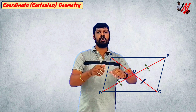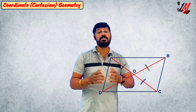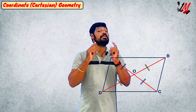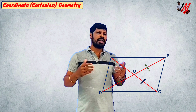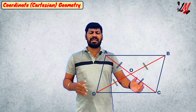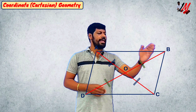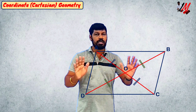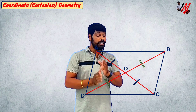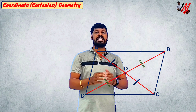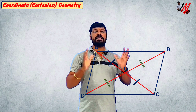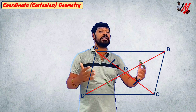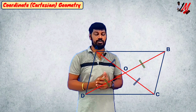A quadrilateral where the diagonals bisect each other — that is a parallelogram. We are going to state: suppose in diagram A, B, C, D is a quadrilateral — not necessarily a parallelogram — and AC and BD bisect each other. Now our task is: is ABCD a parallelogram? How do we prove it?